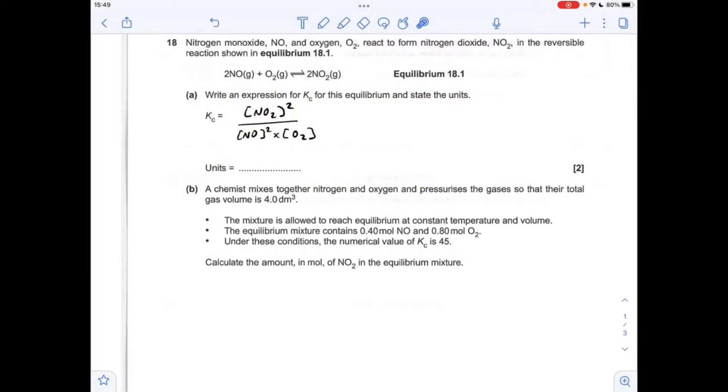So the KC expression is obviously the equilibrium concentration of the NO2 squared because it's balanced with a 2, divided by the concentration of the NO2, multiplied by the concentration of O2.